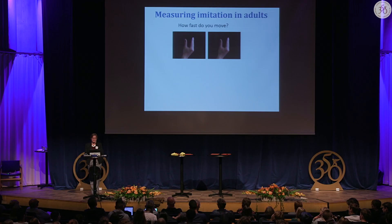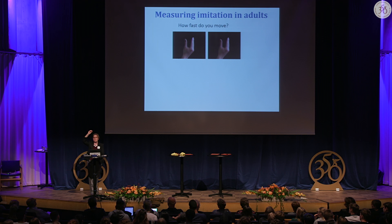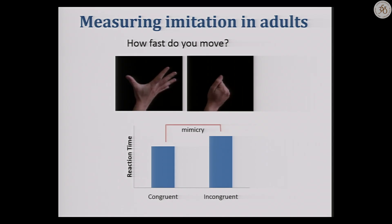We can also look at these effects in adults. The duck task only works for one or two trials with adults, so we use a simple reaction time task. We ask people to make a hand opening movement whenever they see a hand movement on screen. Sometimes they see a congruent hand opening movement — they can imitate and it's quite fast. On other trials, they see a hand closing movement but must still open their hand, and people tend to be a little bit slow. The difference in speed between congruent and incongruent trials measures the tendency to automatically imitate.